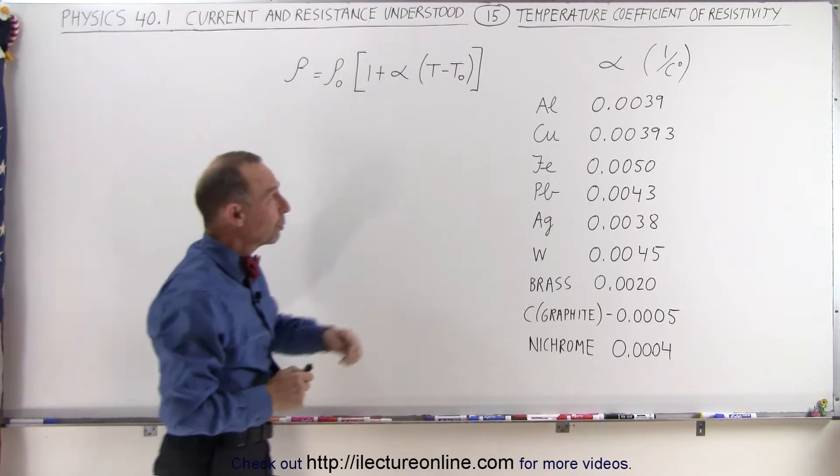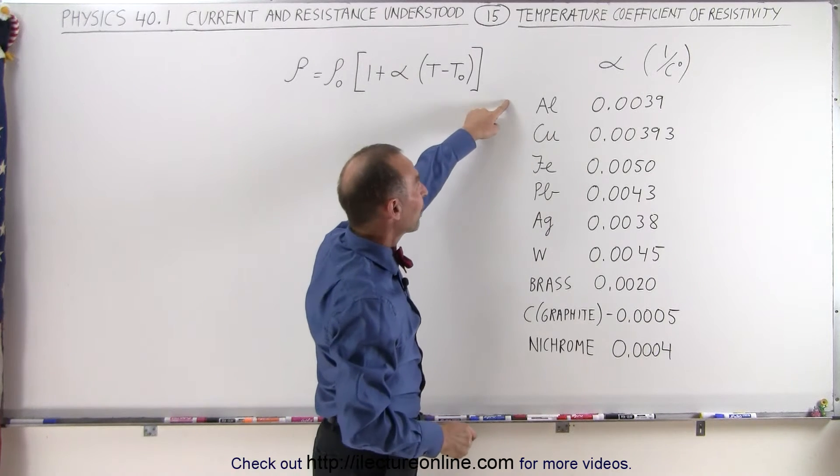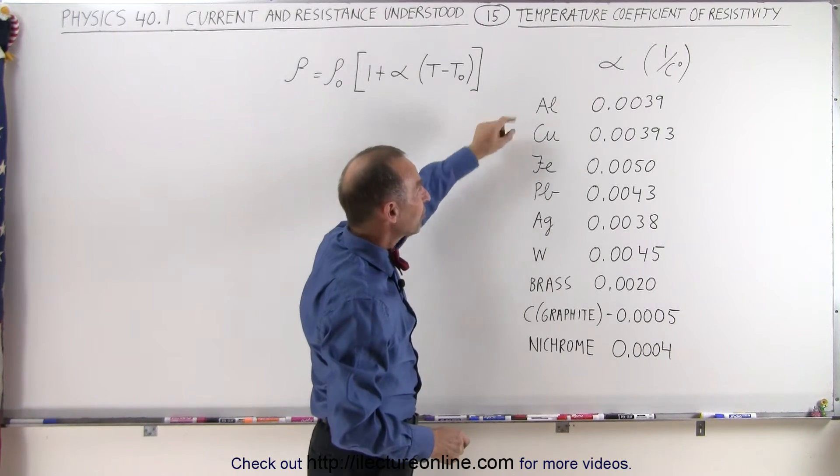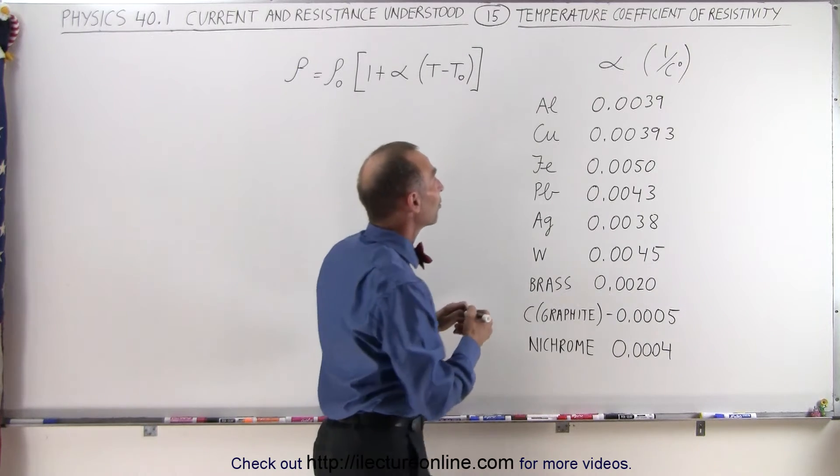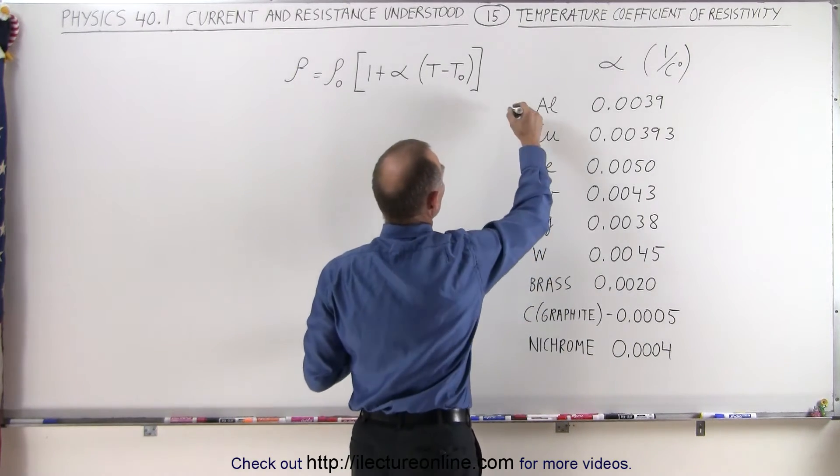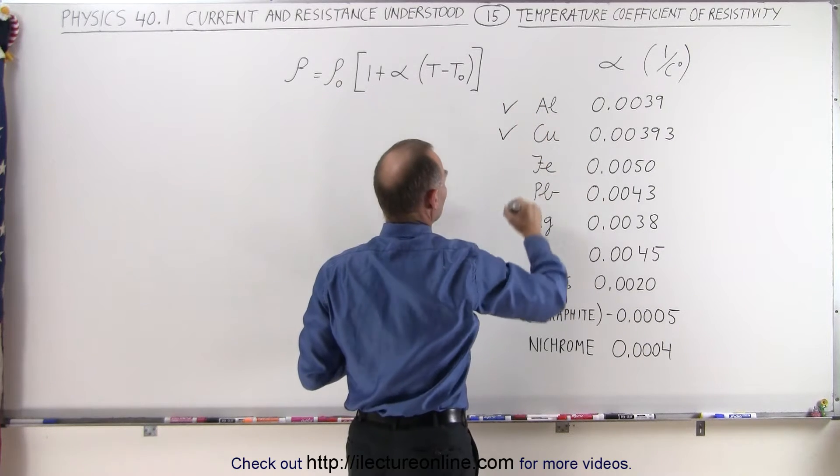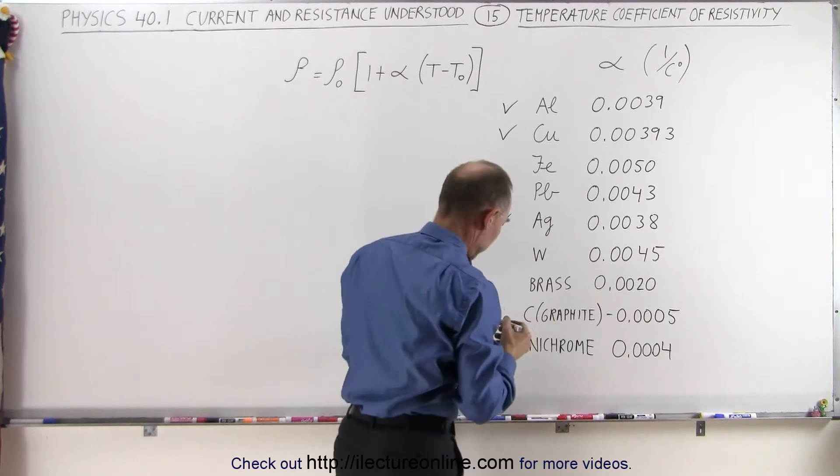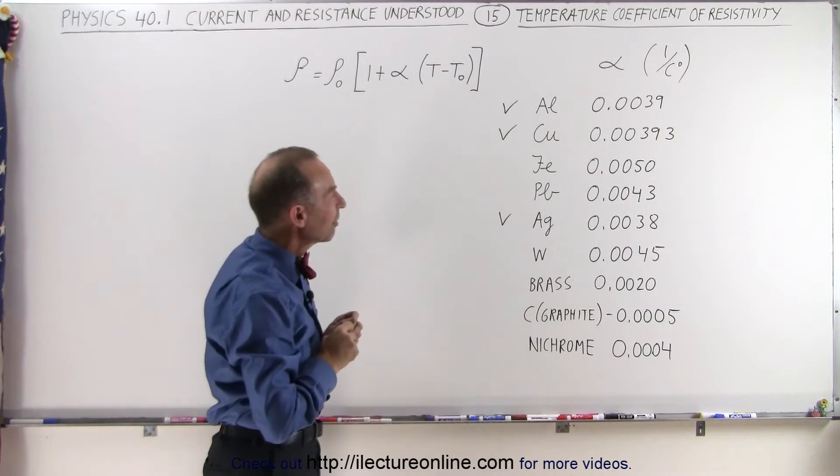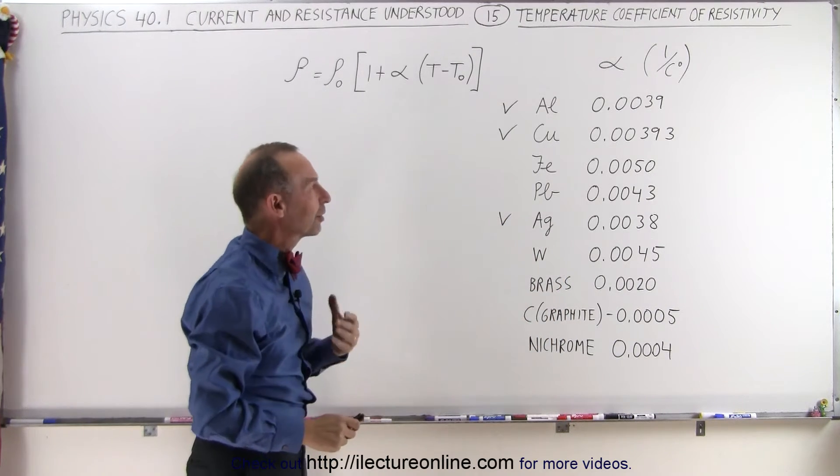But what you will notice here when we look at the various metals is that the temperature coefficient is fairly similar for the various metals, especially the ones that are very good conductors that we talked about before, like aluminum, copper, and silver. Notice how close these temperature coefficients are for resistivity of those three very good conductors—they're very close.